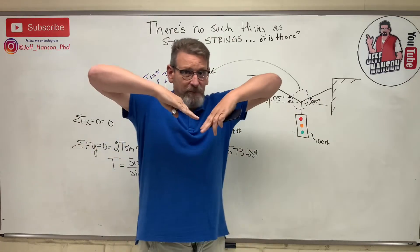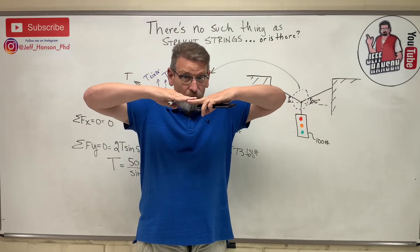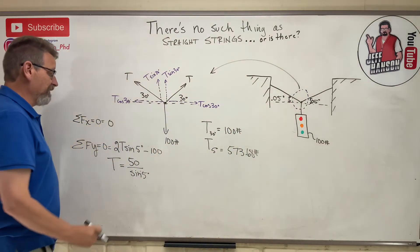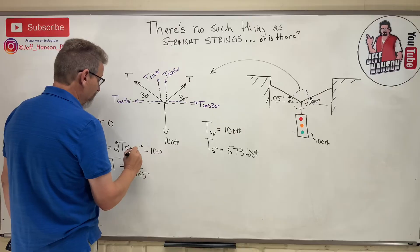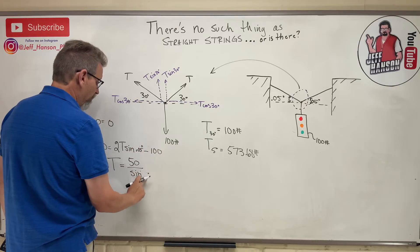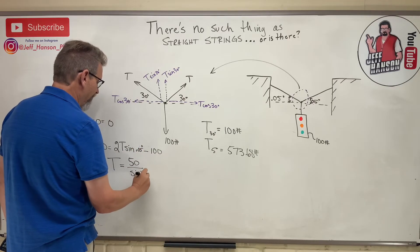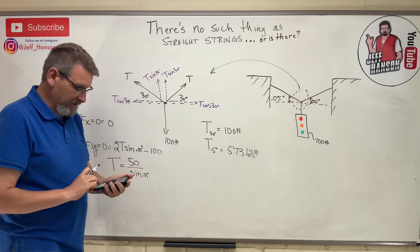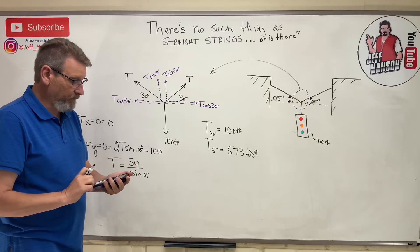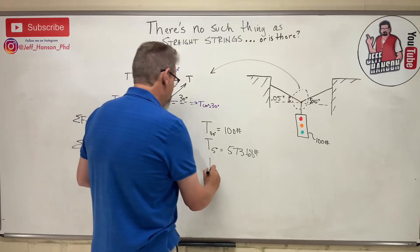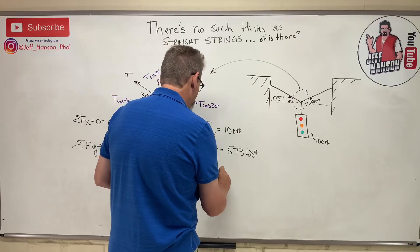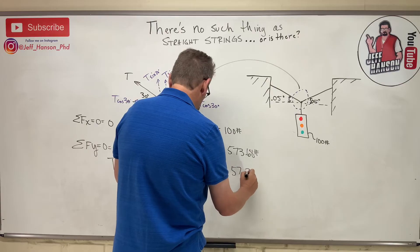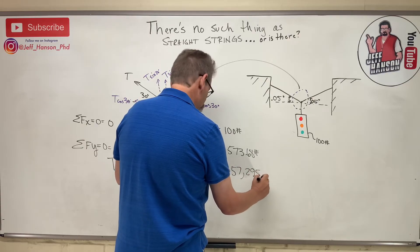We're talking about like it went from here to almost straight, not quite but almost straight. The boss is like did you check the tension? 50 divided by the sine of 0.05 is - oh my gosh - T at 0.05 is equal to 57,295 points some change.